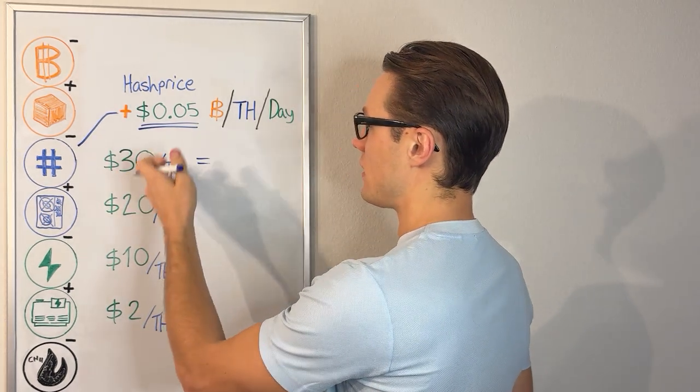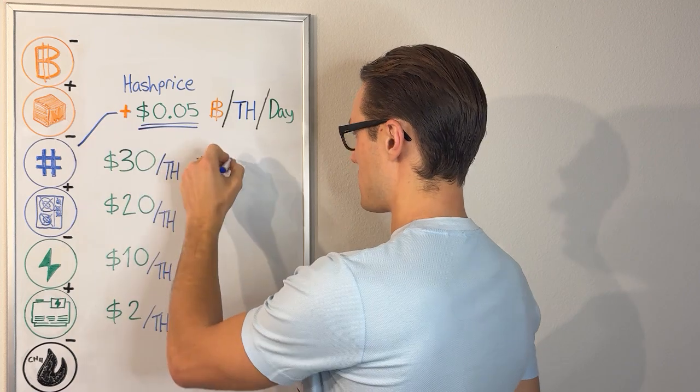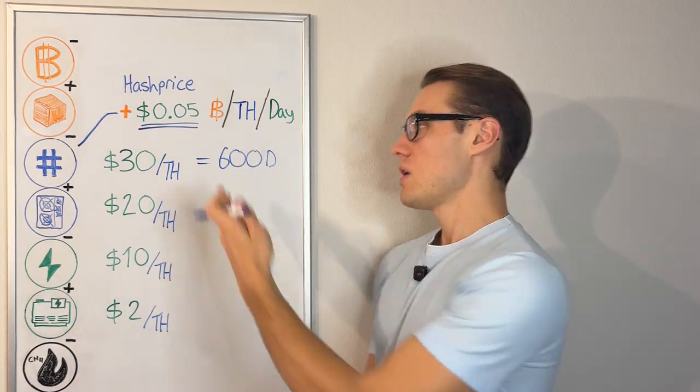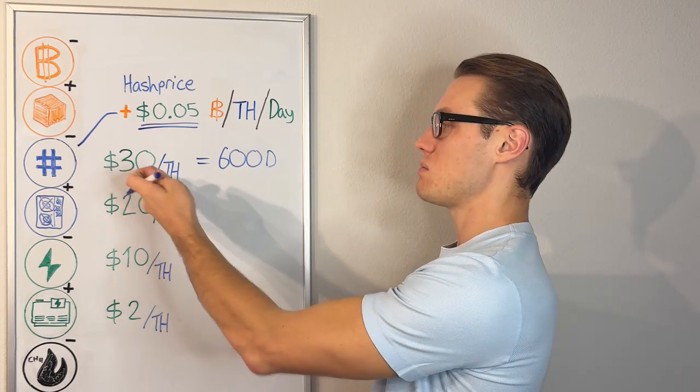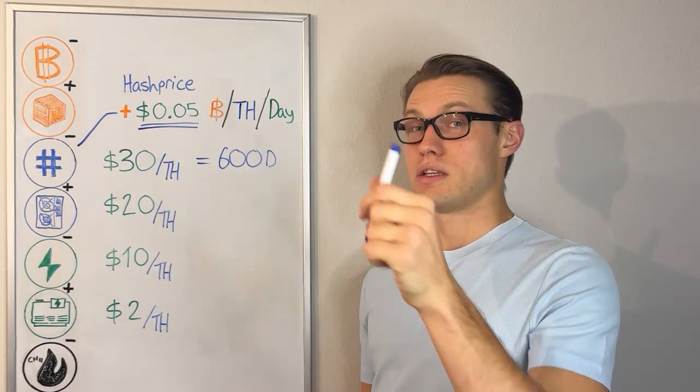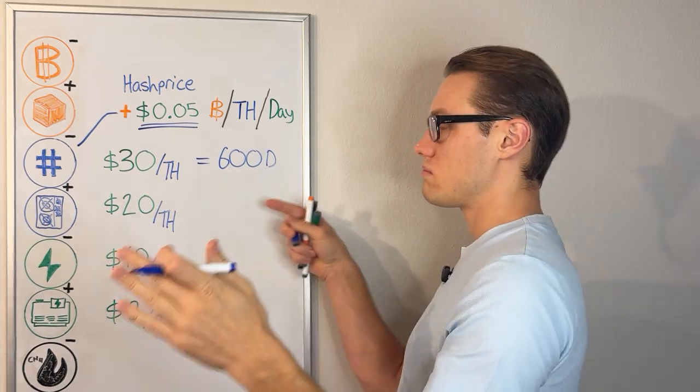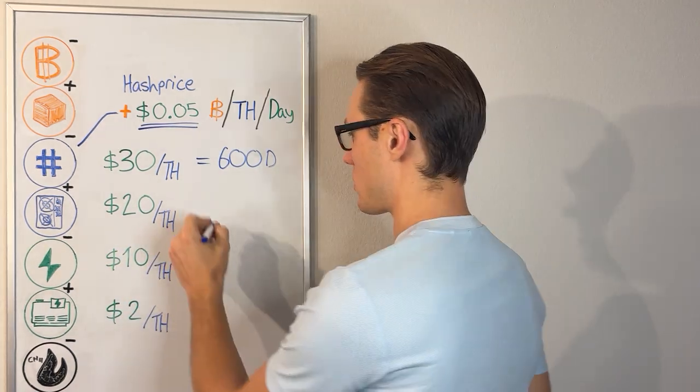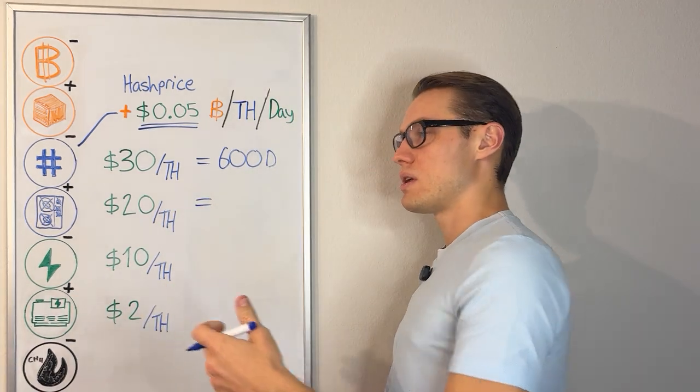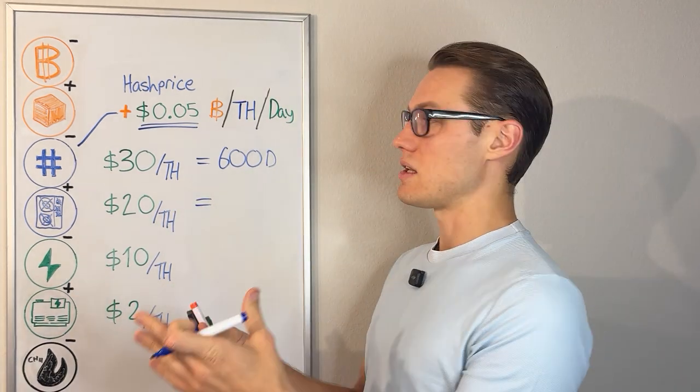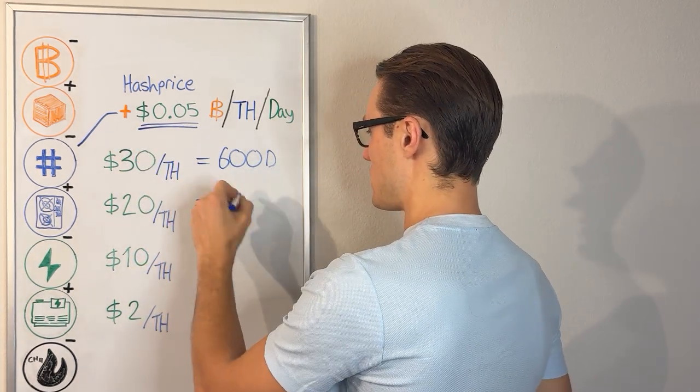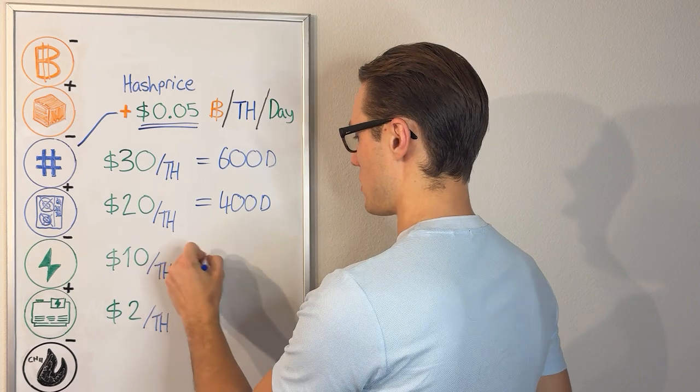The metrics boil down like this: $30 divided by 5 cents equals 600 days. So just revenue alone is a payback period with a brand new latest efficient machine of 600 days. Note that the halving is in 900 days. $20 divided by 5 cents is 400 days. Notice how the payback period is getting smaller.